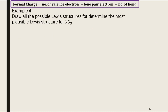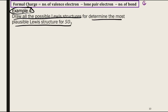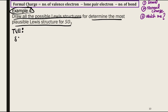For Example 4, you are asked to draw all possible Lewis structures and determine the most plausible one for SO₃. To answer this, you need to draw the Lewis structure, calculate the formal charge, and then determine which is most plausible. First, calculate the total valence electrons for SO₃, which gives 24.